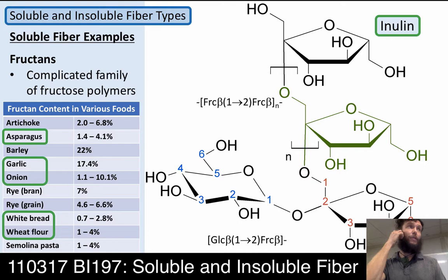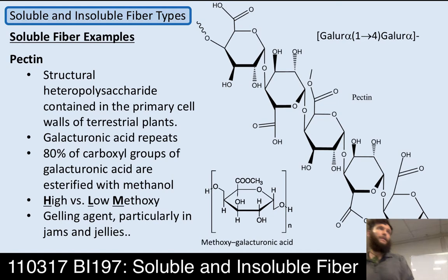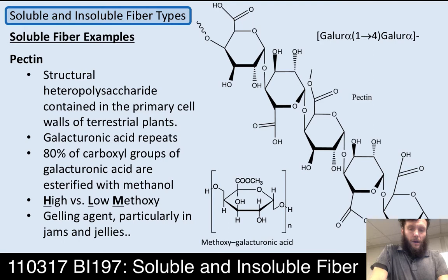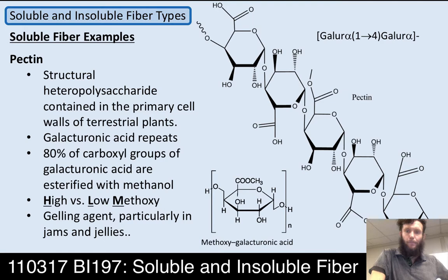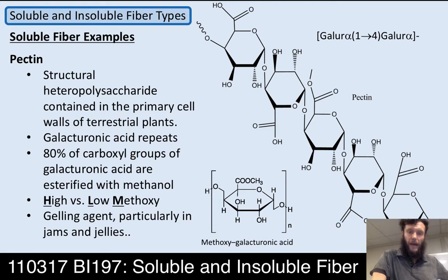Here's pectin — we have some experience with pectin from last week. Pectin is an alpha-1,4 repeat of galactose, and a particular type of galactose — an oxidized form of galactose called galacturonic acid. Galacturonic acid has the C6 hydroxymethyl group oxidized, so it becomes a carboxylic acid at that carbon. Here's some cellulose for comparison — a cellulose polymer.